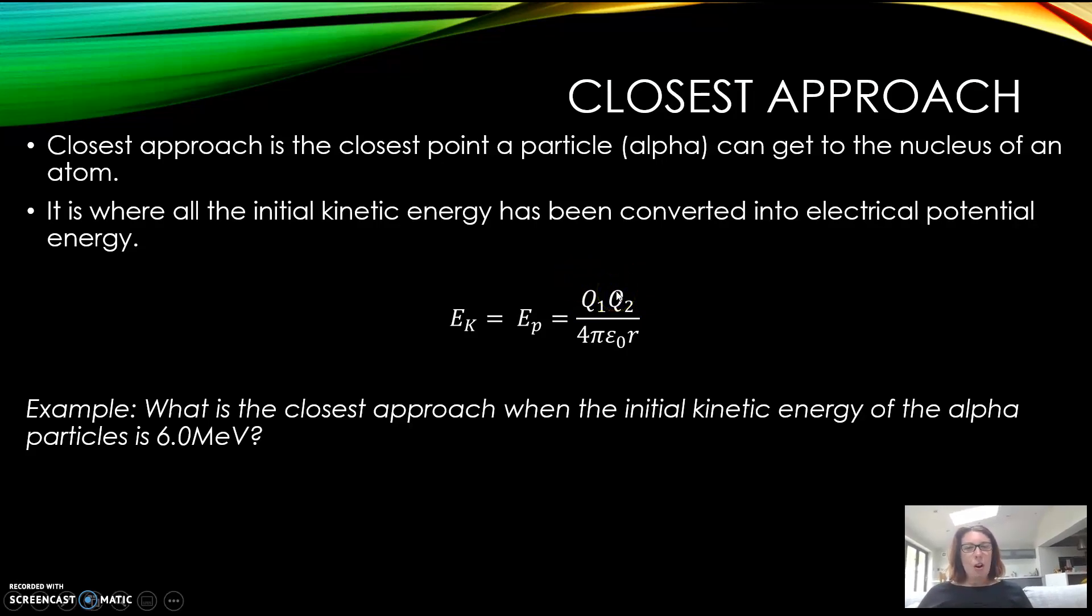q2 would be the charge on the gold nucleus. Gold has 79 protons, it's 79 times the charge of a proton. Then you've got 4π which is a constant, and epsilon naught - it's called the permittivity of free space, it's 8.85 times 10 to the minus 12. Then you've got r which represents the radius of the nucleus.